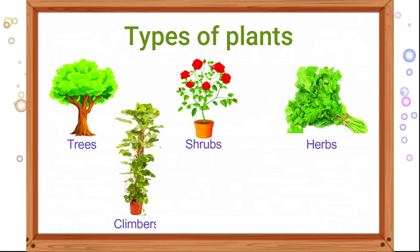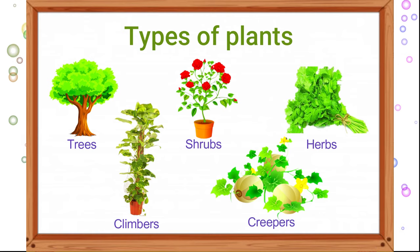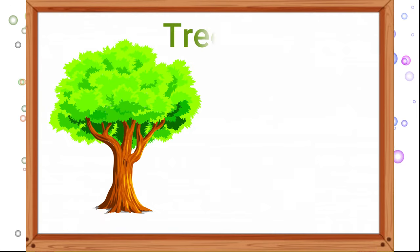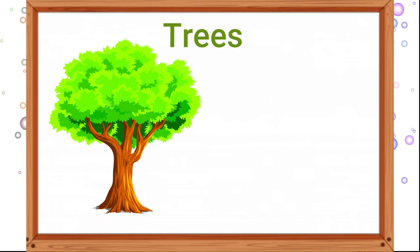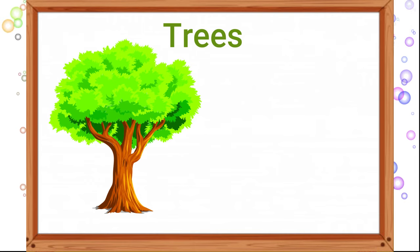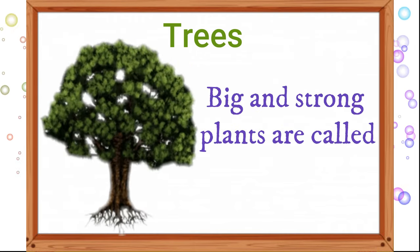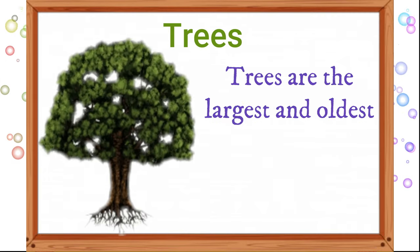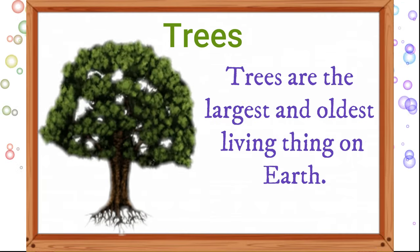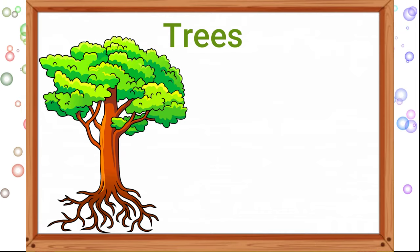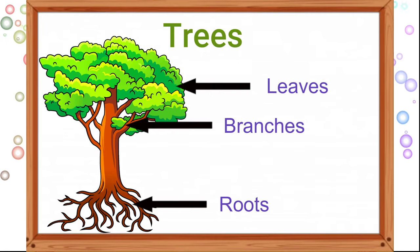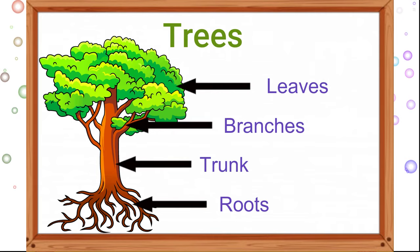climbers and creepers. Now children, let us have a look at these in detail. First one: trees. Big and strong plants are called trees. Trees are the largest and oldest living things on earth. They have roots, branches, leaves, and a hard woody stem called a trunk.